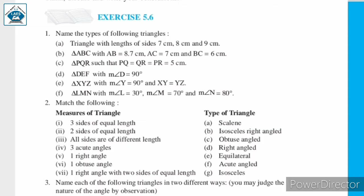Question number 2: match the following. We are given measures of a triangle and the type of triangle, and we have to match the correct answer. First: three sides of equal length. A triangle whose three sides are of equal length — we call that triangle an equilateral triangle.